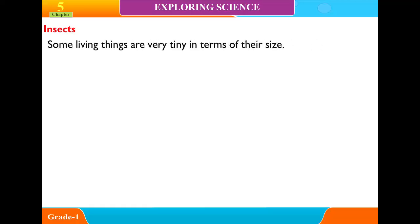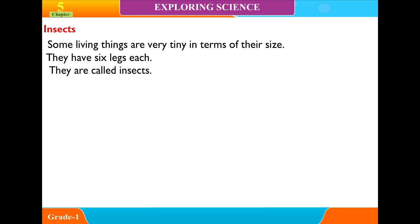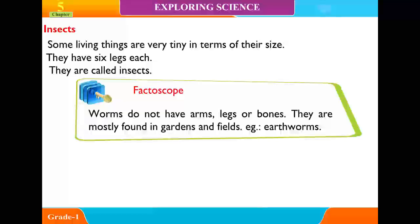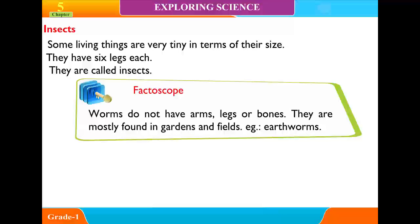Insects. Some living things are very tiny in terms of their size. They have six legs each. They are called insects. Fact: Worms do not have arms, legs or bones. They are mostly found in gardens and fields.